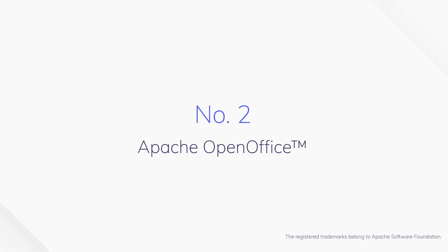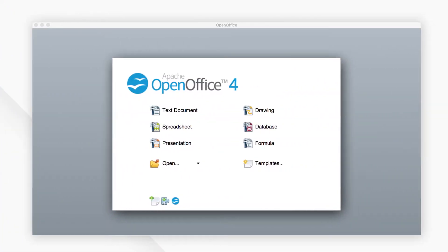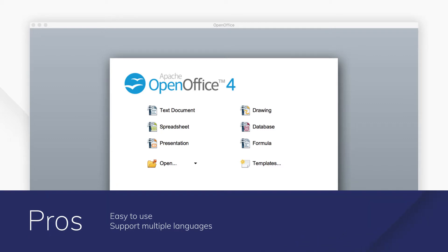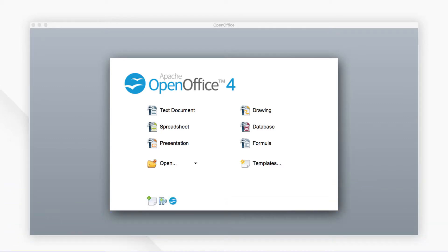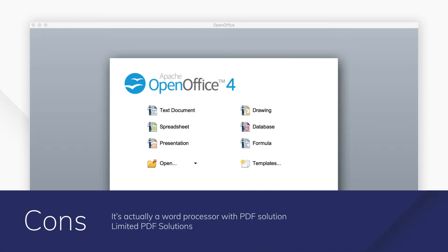2. Apache OpenOffice. Apache OpenOffice is an easy-to-use open source Office software suite for word processing, spreadsheets, presentations, graphics, databases, and more.